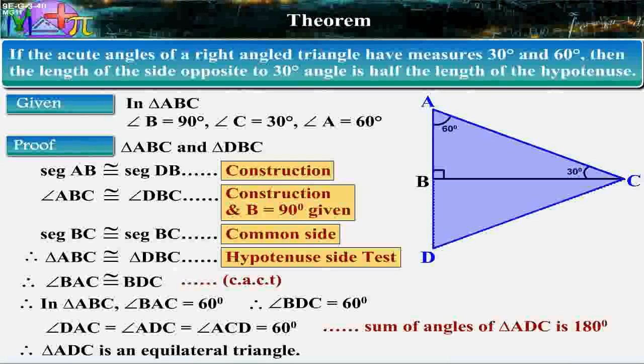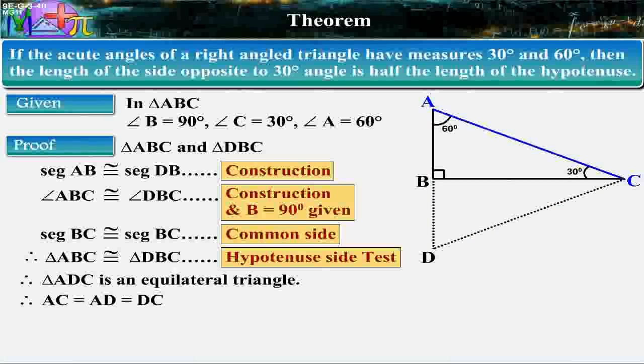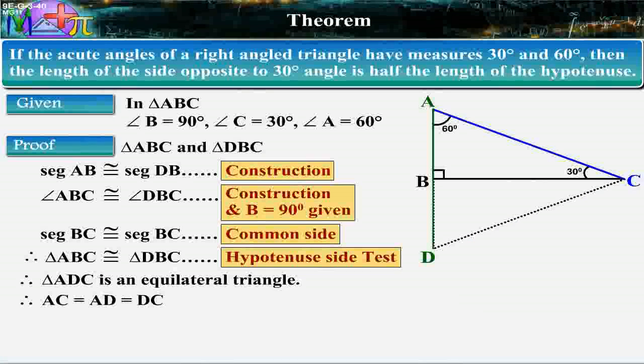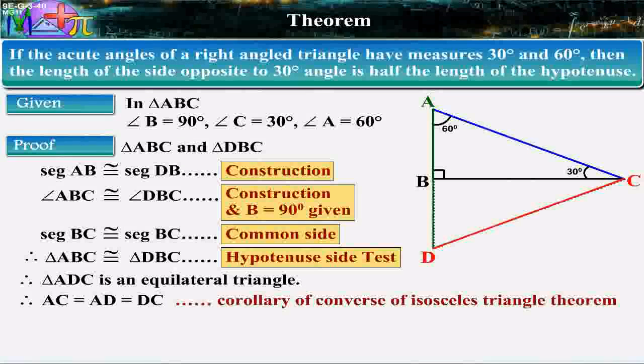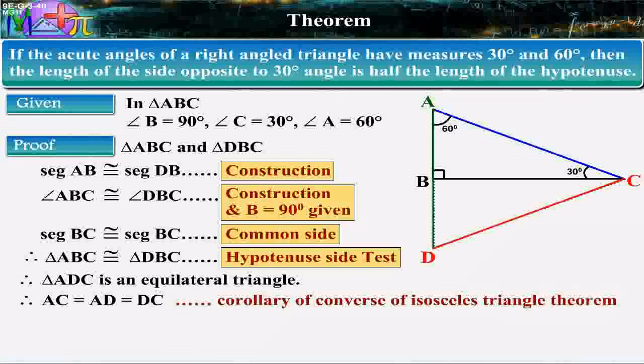Therefore, triangle ADC is an equilateral triangle. Therefore, AC is equal to AD is equal to DC by corollary of converse of isosceles triangle theorem.